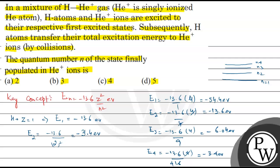So here the energy matches. Which one matches? E2 for hydrogen and E4 for helium match. So N equals 4, the answer for this question is option C. Hope you understand the question, best of luck.